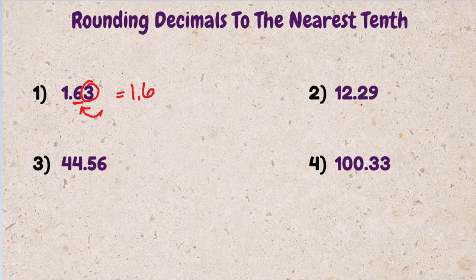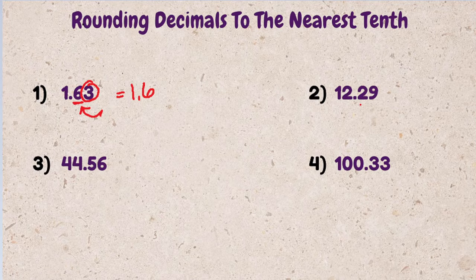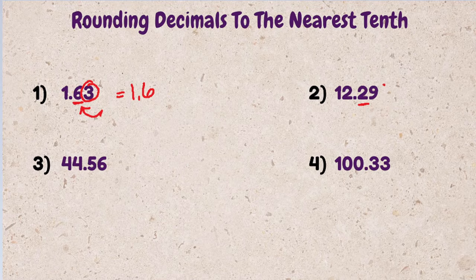Second example: 12.29. 2 is the number in our tenth place. 9 is the one we evaluate. 9 is greater than 5, so that means this digit has to round up. 12.29 rounds to 12.3.